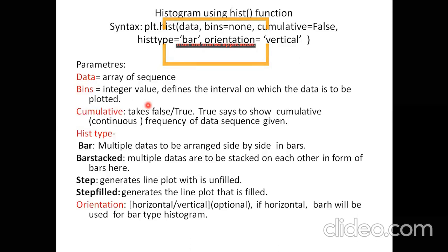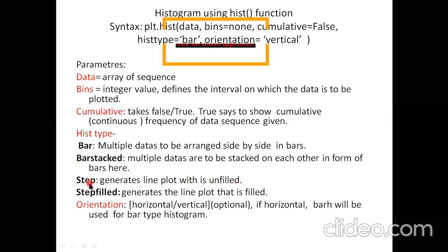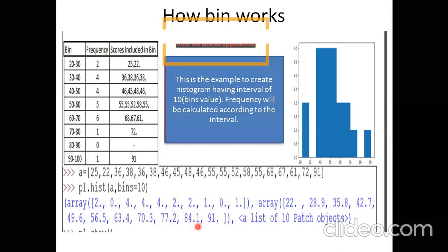Parameters of plt.hist: data (array or sequence), bins (the interval on which data is plotted — if not given, matplot generates it automatically), cumulative (True or False for continuous frequency), histtype (bar, barstacked, step, stepfilled), and orientation (horizontal or vertical). The histtype options are: bar (simple), barstacked (bars stacked one above another), step (unfilled line), and stepfilled (filled line). Orientation can be horizontal, which gives a horizontal bar.